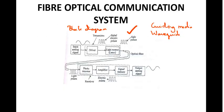The next topic is one of the applications of fiber optics — the fiber optic communication system. Here is the block diagram of the fiber optic communication system. In this system, the optical fiber is used as a guiding media or waveguide. It acts as a path for the carrier signal, which is why it is called a propagation medium.